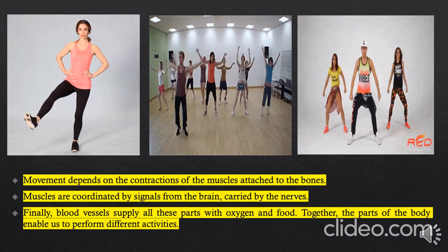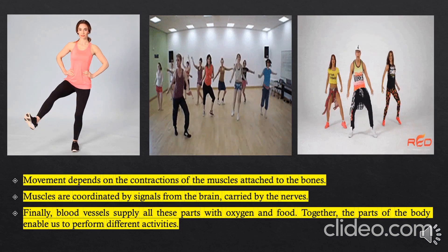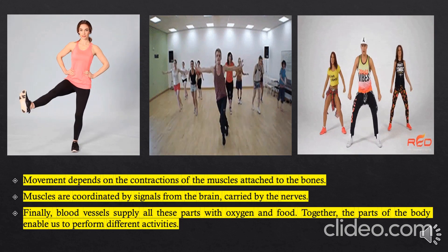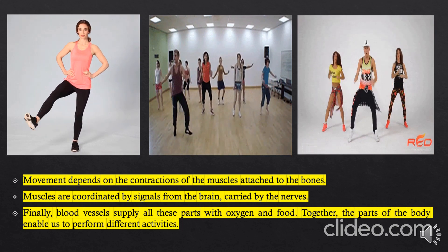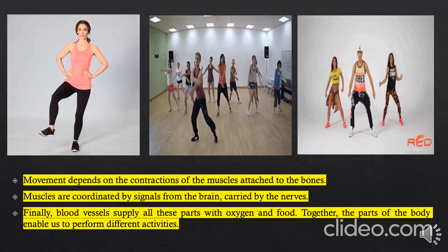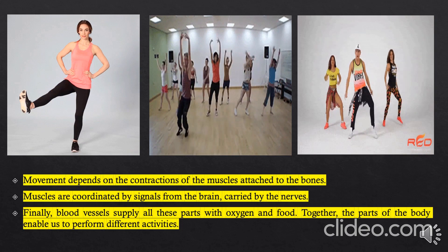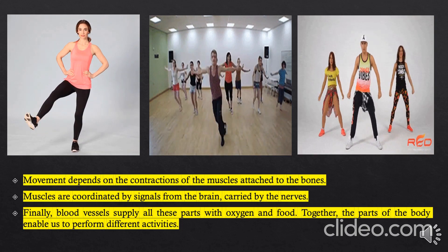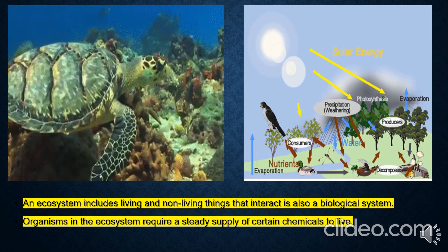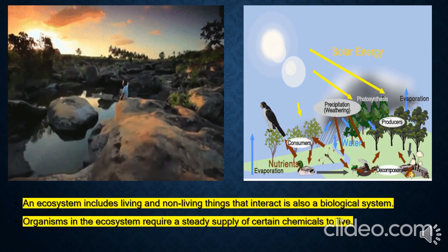To further explain biological systems: movement depends on the contractions of muscles attached to the bones. Muscles are coordinated by signals from the brain, carried by the nerves. The blood vessels supply all these parts with oxygen and food. Together, the parts of the body enable us to perform different activities.